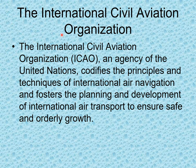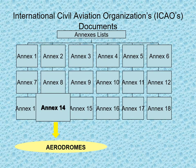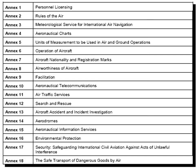The International Civil Aviation Organization (ICAO) is an agency of the United Nations that codifies the principles and techniques of international air navigation and fosters the planning and development of international air transport to ensure safe and orderly growth. Annex 14 of the ICAO document deals with aerodromes, meaning airports.